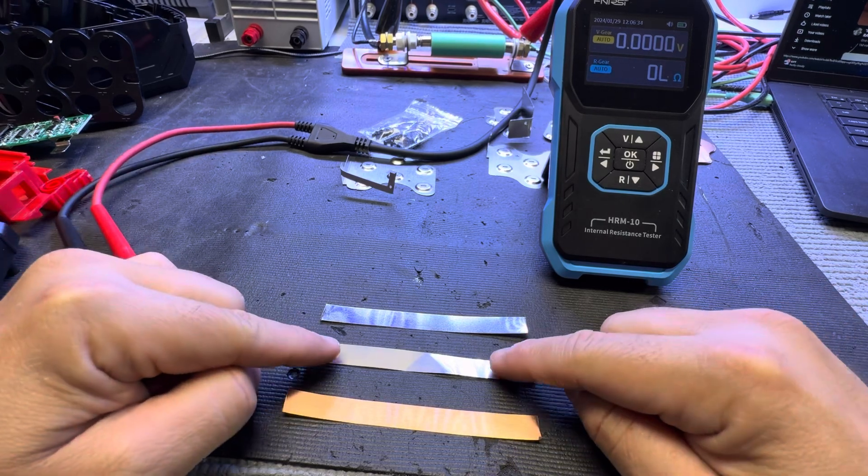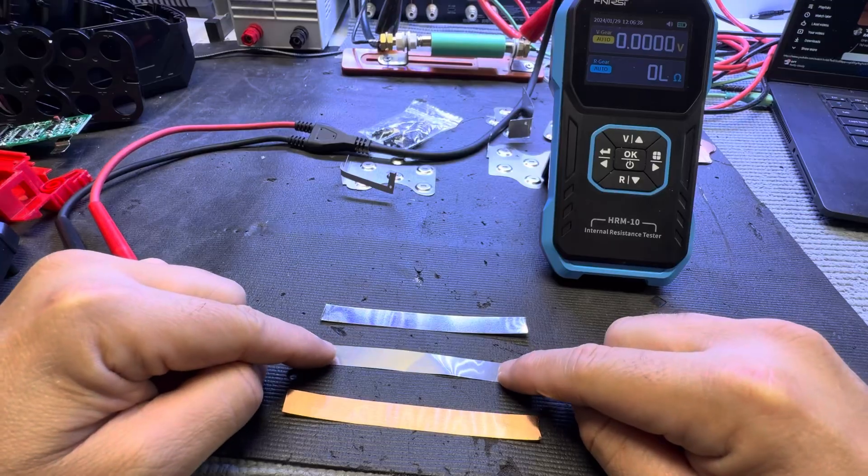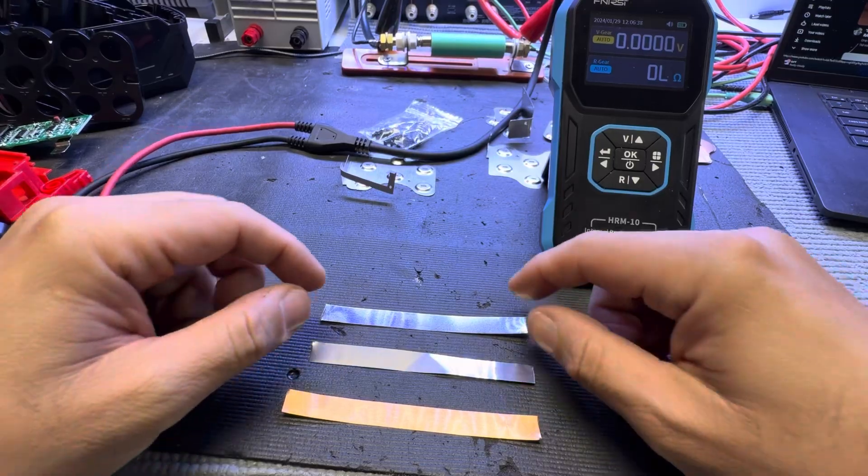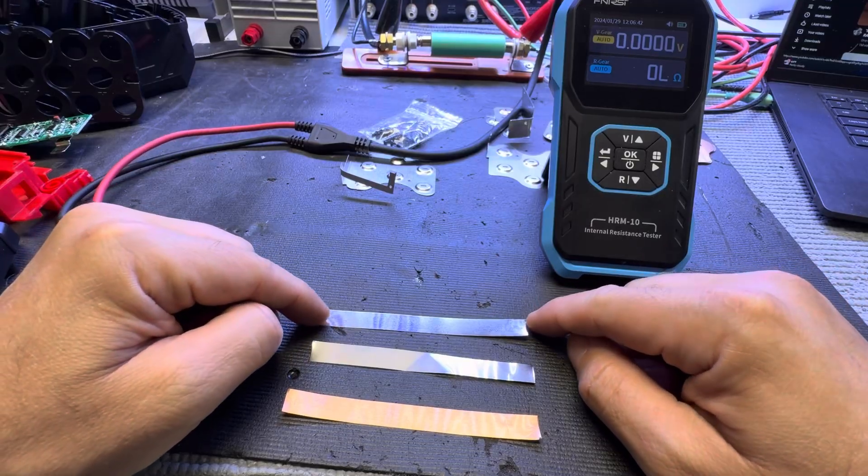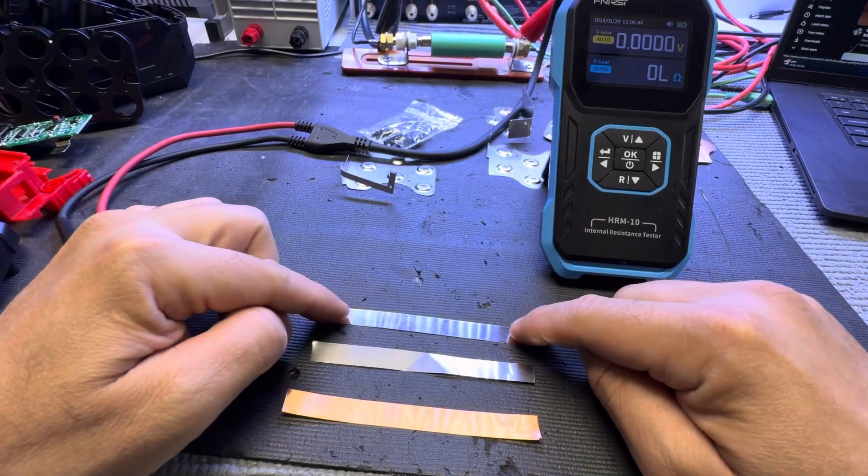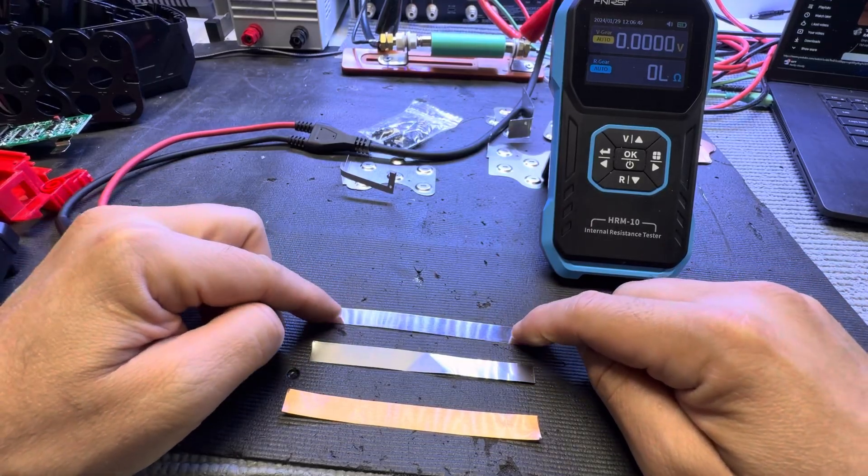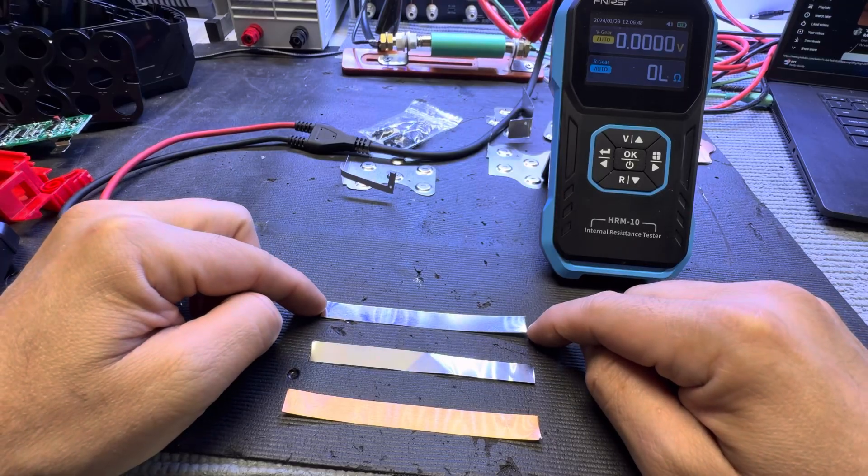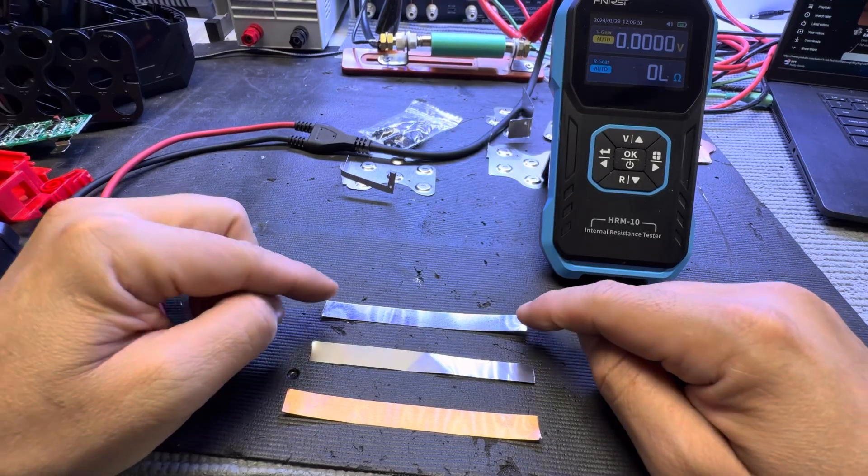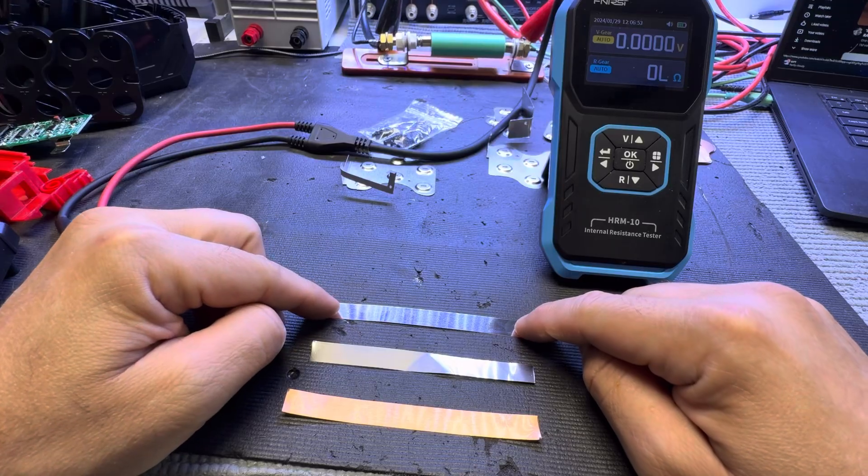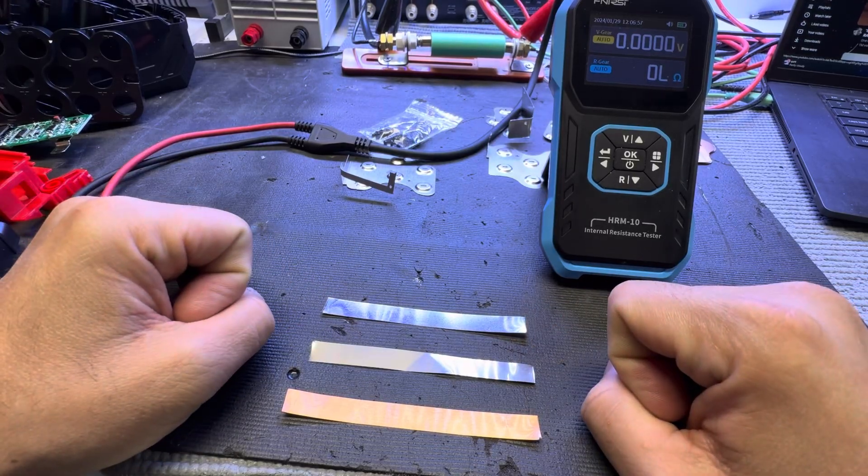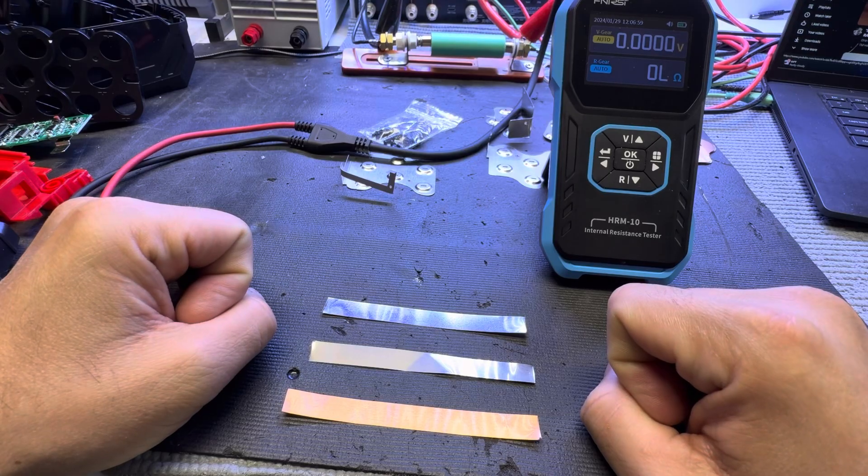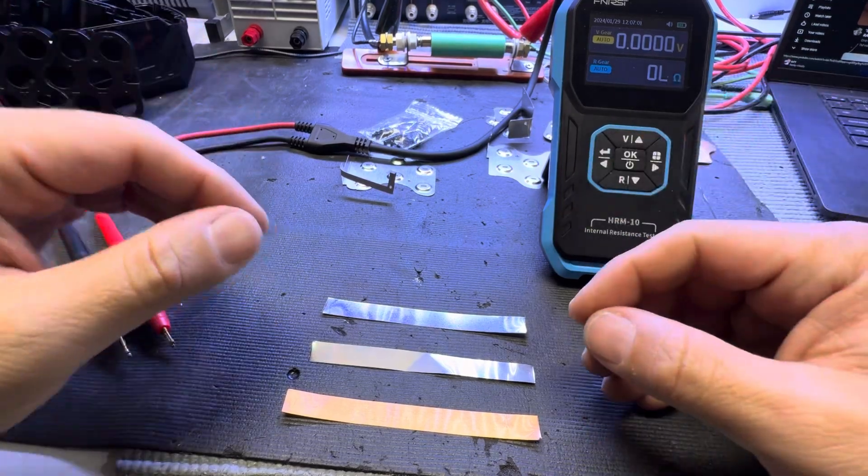Now you see how the pure nickel reacts to the IR meter and the numbers we're getting versus the nickel steel. In my opinion, this is absolutely the best method to identify what metal you're getting.